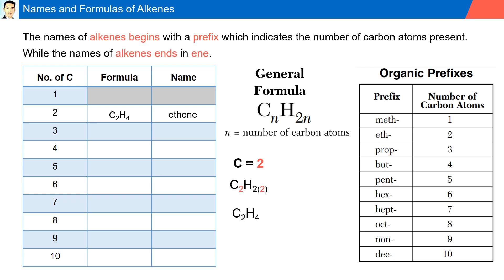For an alkene with three carbons, plugging into our general formula we have C3H6. For the name, it starts with prop because there are three carbons and ends in -ene: propene. Each alkene differs from the next by one carbon and two hydrogen, which predicts our next molecule to be C4H8, known as butene.